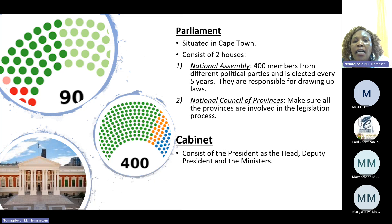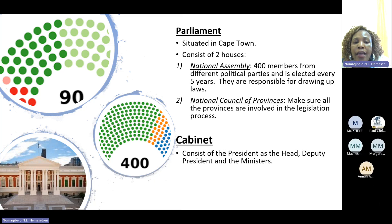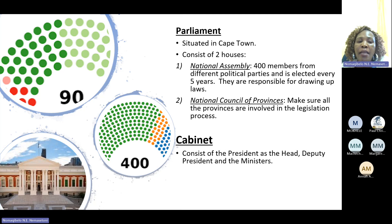The National Council of Provinces makes sure all the provinces are involved in the legislation process. The cabinet consists of the president as the head, the deputy president and the ministers.